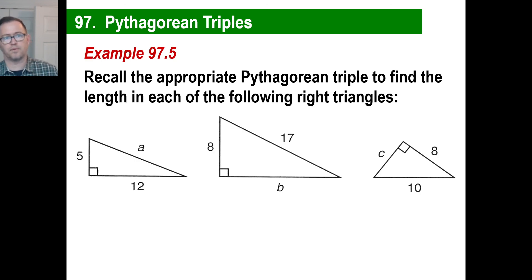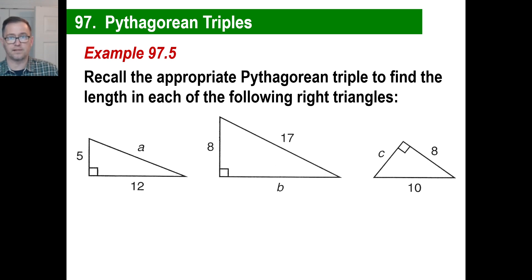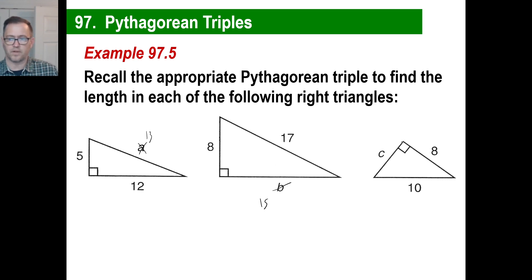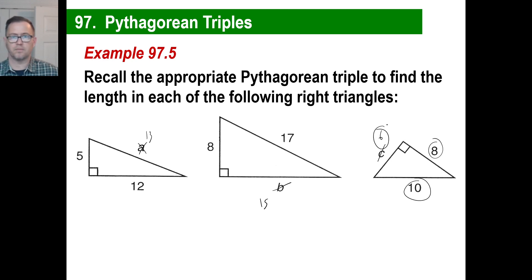Here's a book example: recall the appropriate triple, find the length in each of the following right triangles. Five squared plus 12 squared is how many squared? That's 13 squared, so A is 13. Eight squared plus what squared gives you 17 squared? That'll be 15 squared. And something squared plus eight squared equals 10 squared — this is a 3-4-5 triangle multiplied by two. Four has been multiplied by two, five has been multiplied by two, so three is multiplied by two, giving us six.